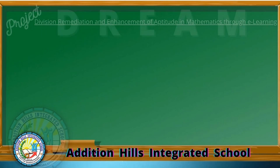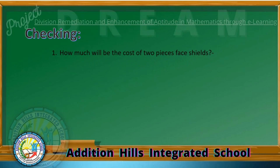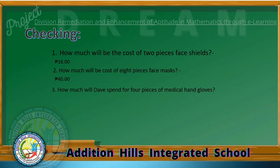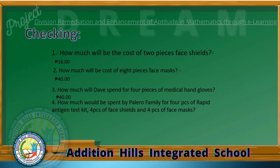Are you done answering? Time to check. Number 1: How much will be the cost of 2 pieces of face shield? The correct answer is P18. Number 2: How much will be the cost of 8 pieces of face masks? The correct answer is P40. Number 3: How much will Dave spend for 4 pieces of medical hand gloves? The correct answer is P40. Number 4: How much would the Palero family spend for 4 antigen test kits, 4 face shields, and 4 face masks? The correct answer is P6,056.